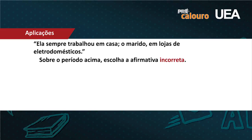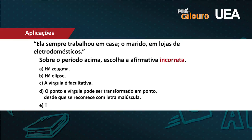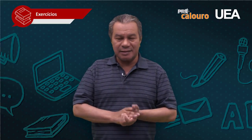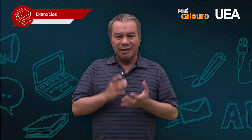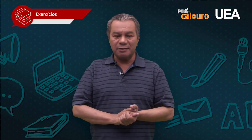Nós queremos a letra errada: a letra A diz que a zeugma é verdade, a letra B diz que a elipse é verdade, e a letra C diz que a vírgula é facultativa — esse é o erro, é a alternativa incorreta, porque a gramática normativa impõe o uso dessa vírgula para indicar a ausência do verbo. A letra D diz que o ponto e vírgula poderia ser transformado em ponto desde que se recomece com letra maiúscula — perfeito. A lógica do período composto por coordenação é que você pode transformar as duas orações em dois períodos simples. Quando o período é composto por subordinação, essa lógica desaparece, porque uma oração é dependente da outra.